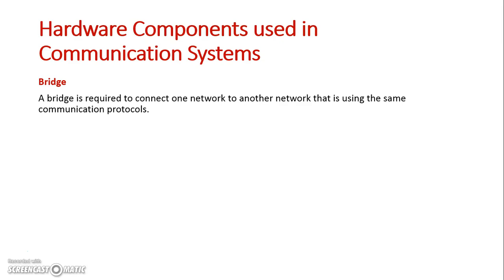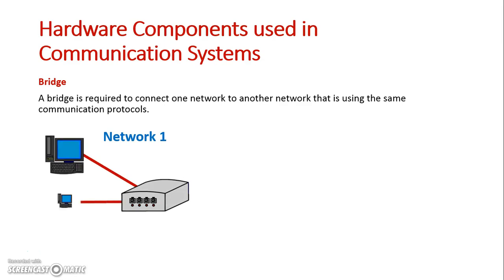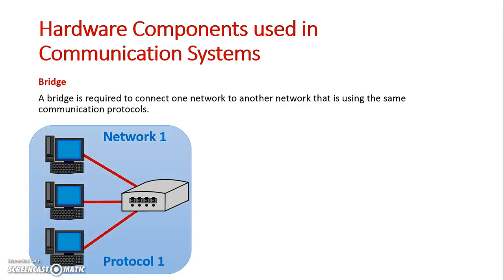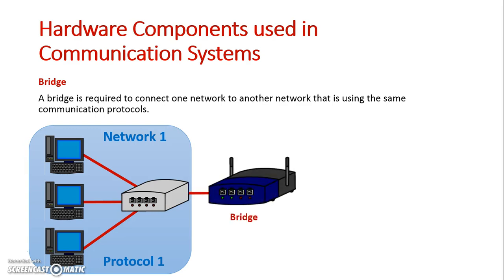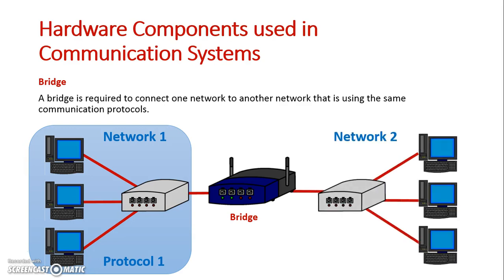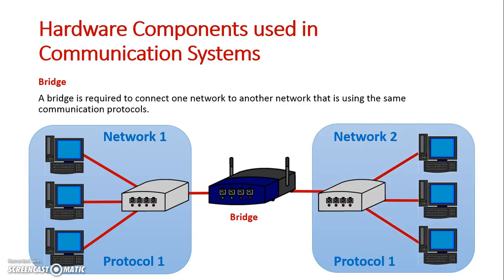A bridge is required to connect one network to another, but they have to be using the same protocol. Here I have network one with three devices connected together. If I want to connect this network to another network, it needs to have been running its own protocol. I then use a device known as a bridge to connect network one to network two. As long as both networks are running the same protocol, they can communicate with each other through the bridge.